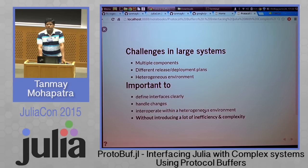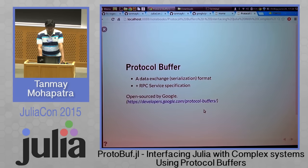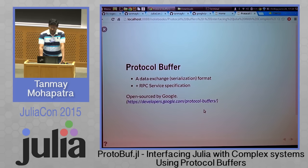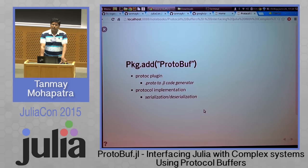Protocol buffers is a nice way to do some of this. It is a data exchange format — you can call it a serialization format — plus an RPC service specification. It was open-sourced by Google. It is used by Google internally, and a lot of other large applications use it to expose APIs.